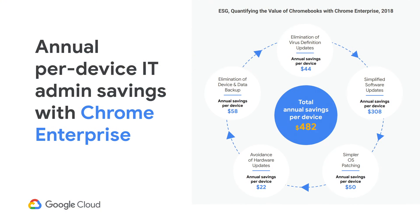Furthermore, analysts from ESG evaluated how much organizations can save when switching to Chromebooks with Chrome Enterprise, based on the elimination of common IT tasks. Total device savings can amount to $480 per device, outside of the cost of hardware and licensing themselves.